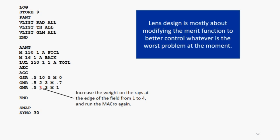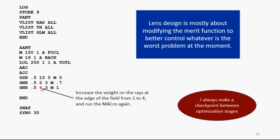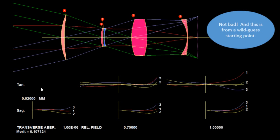Right now, I want you to increase the weight of the ray grid at full field from 1 to 4 and run that macro again. And by the way, I always make a checkpoint between optimization stages. Not bad. And this is from a wild guess starting point. It's really quite a good lens.